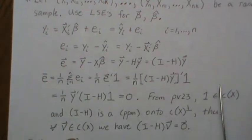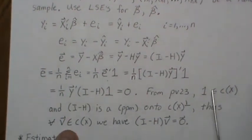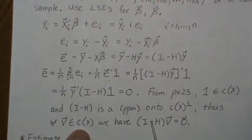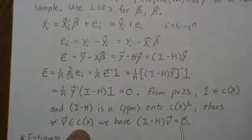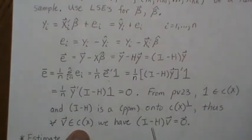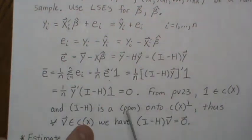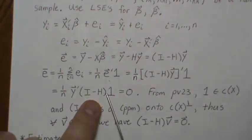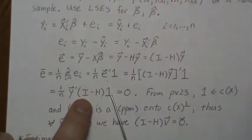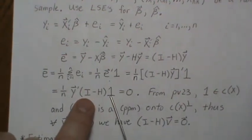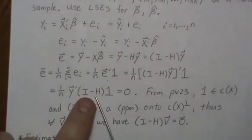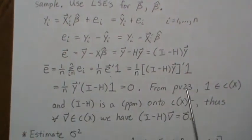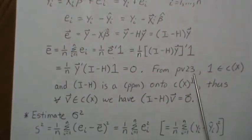Since (I − H) is a perpendicular projection matrix onto the orthogonal complement of the column space of X, for every vector in the column space of X, pre-multiplying by (I − H) gives zero. So H times the ones vector is the ones vector, and identity times ones is ones, so ones minus ones is zero.